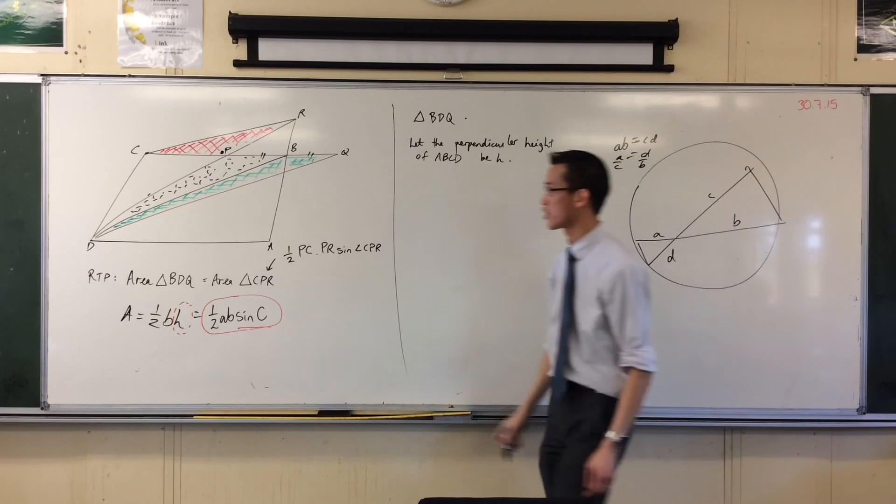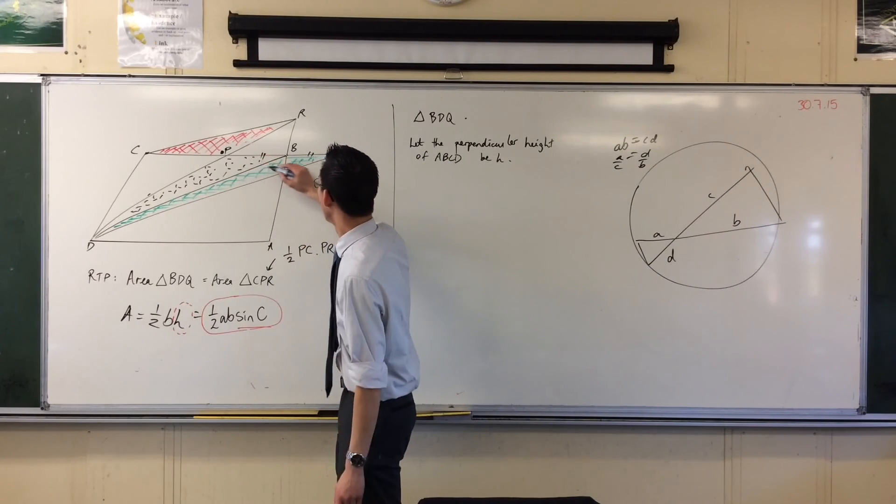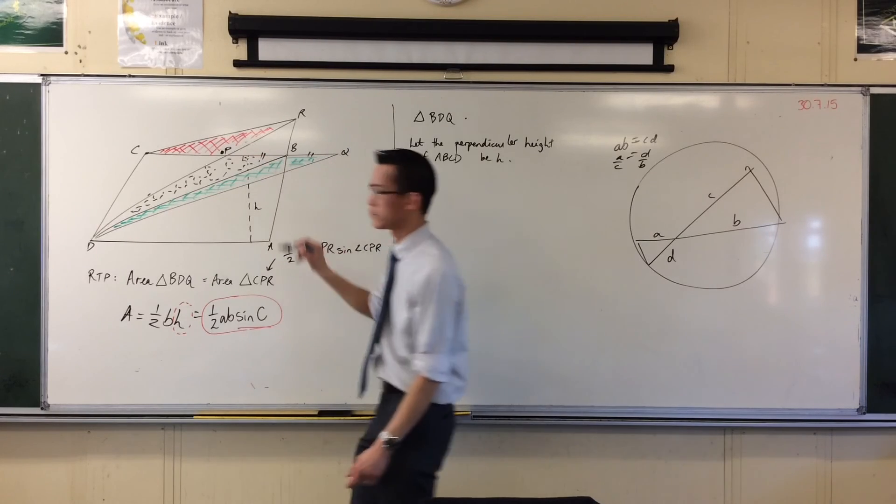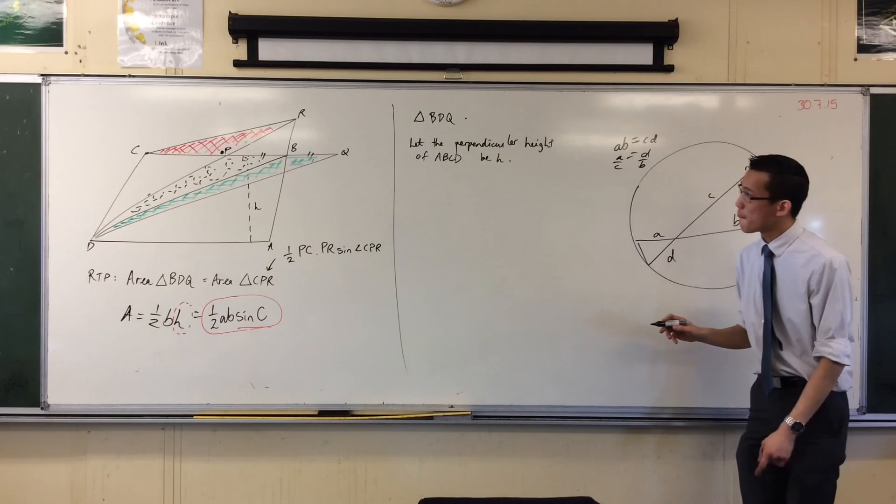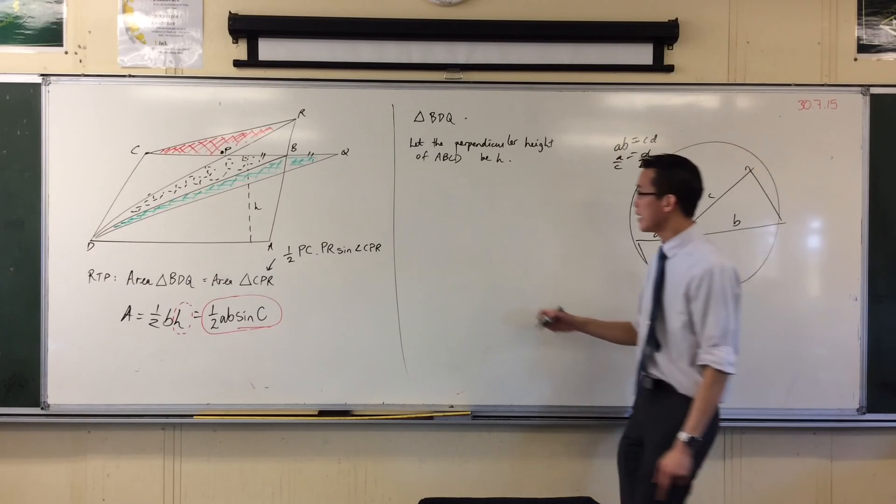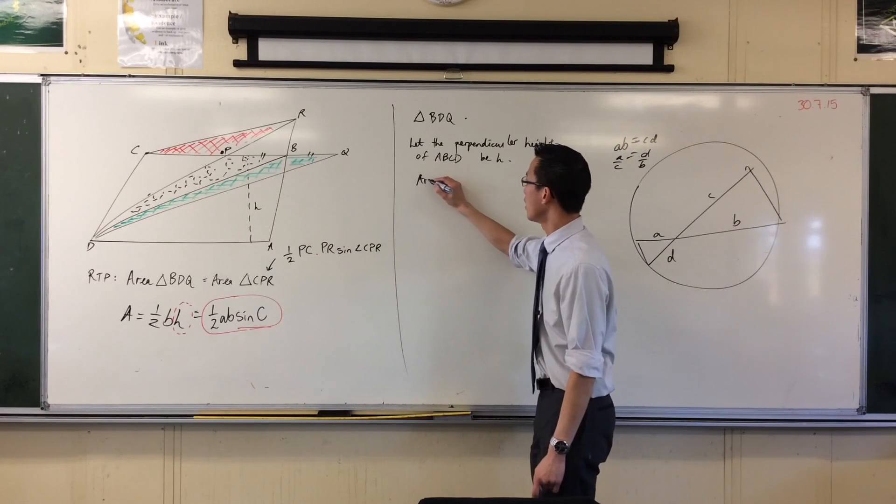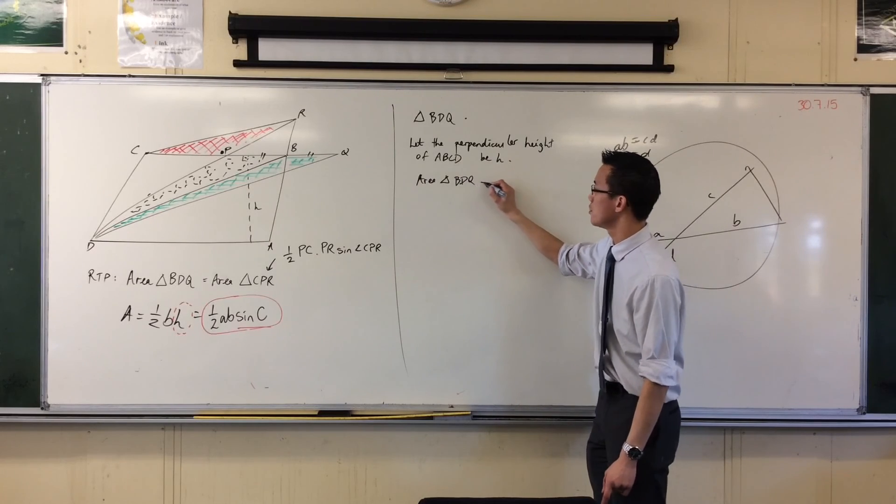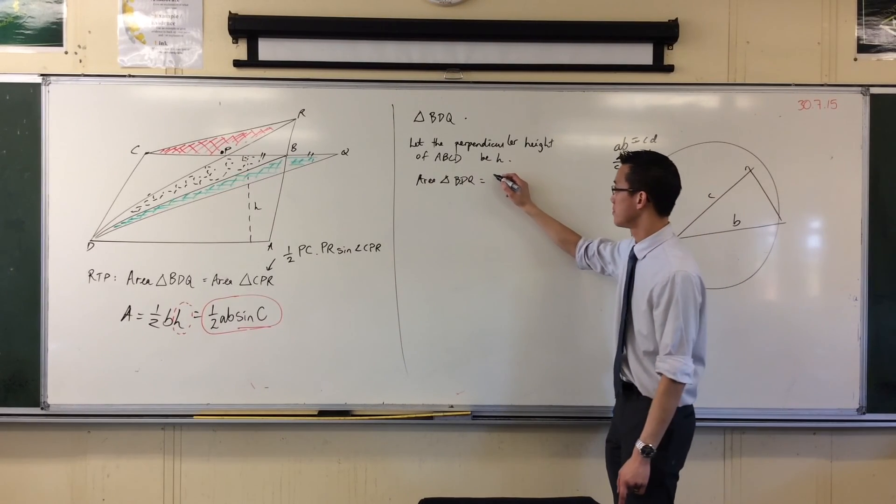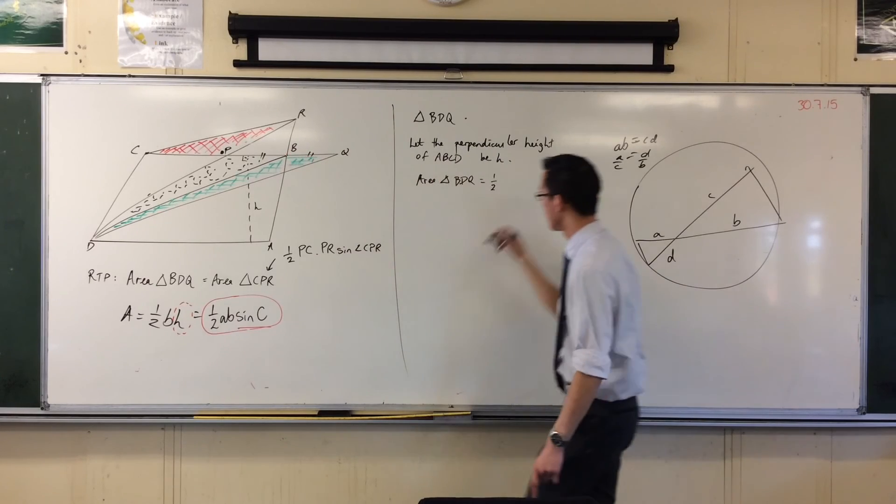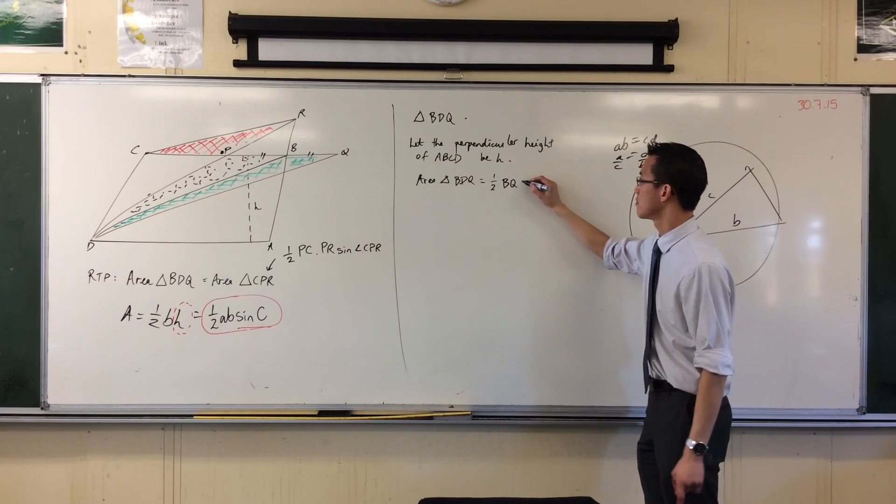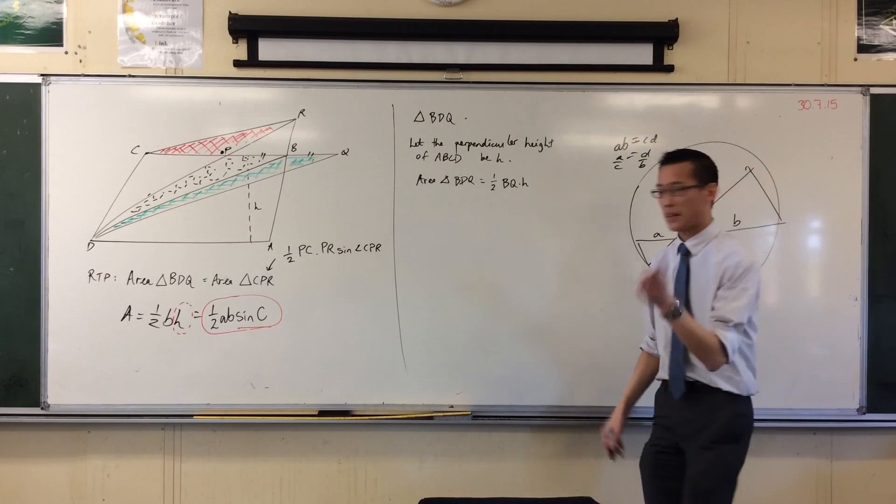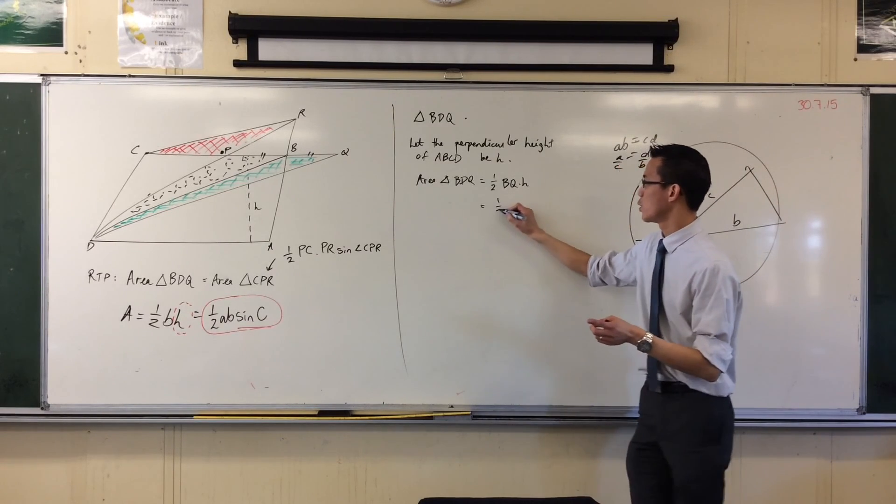Therefore, I can say the area of triangle B, D, Q is equal to half base, that's B, Q, times height, by definition.